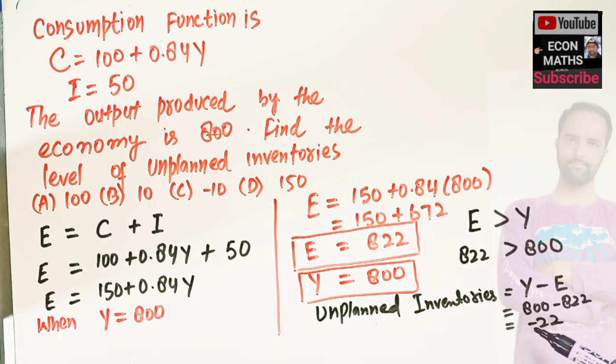Here you can see our expenditure is greater than the income. That means our unplanned inventories is the difference between the output level and aggregate expenditure, which comes out to be negative 22.